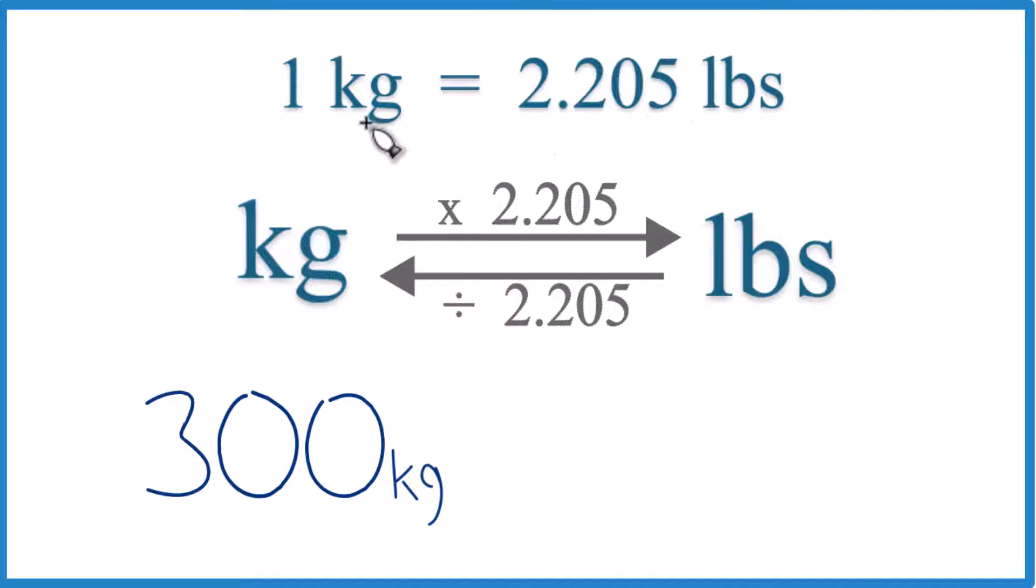And if you think about it, one kilogram is 2.205, 300 will just be 300 times this number here. So this is what we call a conversion factor. We need it when we go from kilograms to pounds or pounds to kilograms.